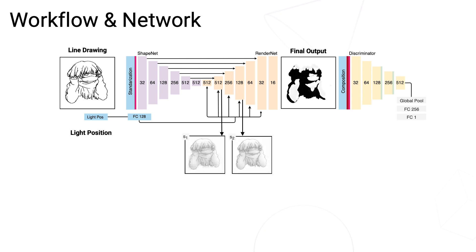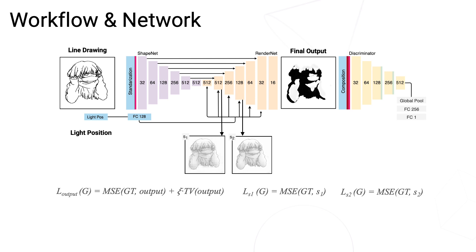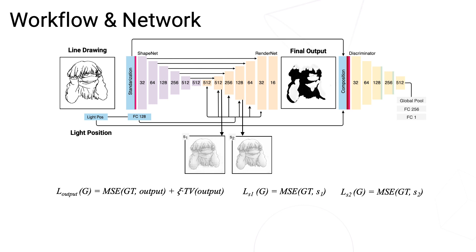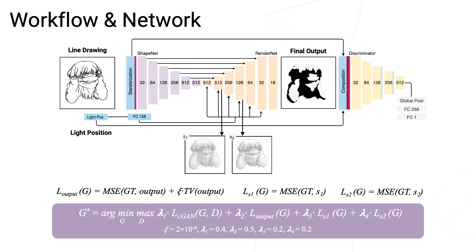Both intermediate outputs are soft shadows. The final outputs S1 and S2 from the generator are penalized by mean square error losses. We add a total variation term in the final output loss to encourage smooth shadow boundaries. The input of the discriminator is the composition of shadow and line drawing, and the lighting direction. The final objective is the sum of GAN loss and the losses of outputs S1 and S2.